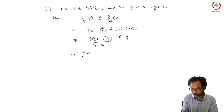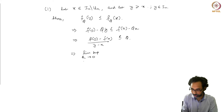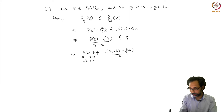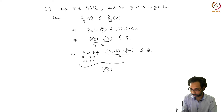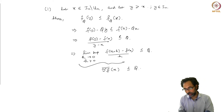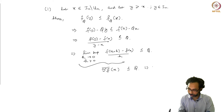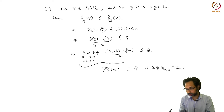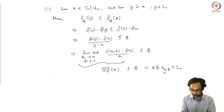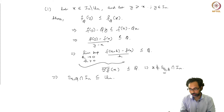This implies that the lim sup as h goes to 0 with h positive of [f(x+h) - f(x)] / h is less than or equal to q, and this is nothing but the upper Dini derivative of the positive part. This is less than or equal to q, which implies that x does not belong to Eqq ∩ In, because on this set the upper Dini derivative must be strictly greater than q. So this means that Eqq ∩ In is a subset of Un.